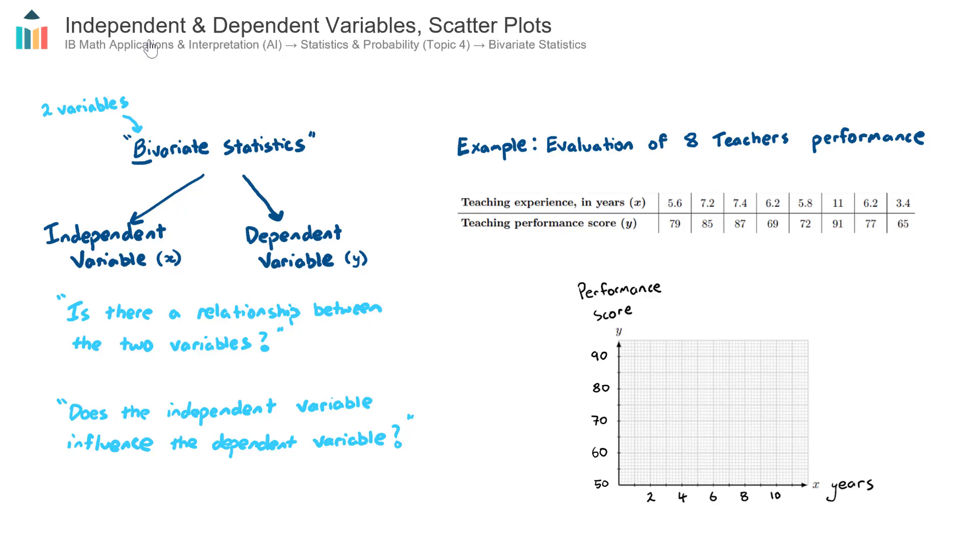In this video, we look at independent and dependent variables, and then plotting the values of these variables onto a scatter plot or a scatter diagram. This is the introductory video to a subtopic called bivariate statistics, which is part of topic four in the AI course.